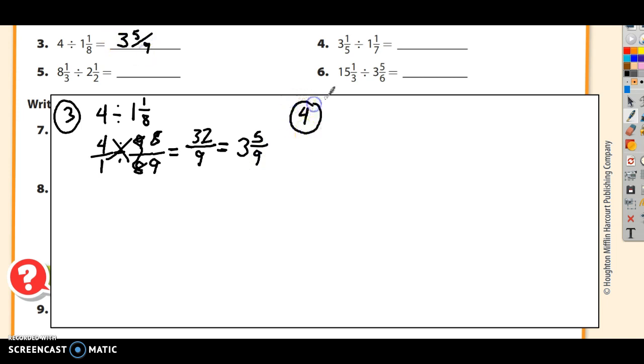Number 4. I've got 3 and a fifth, divided by 1 and a seventh. 3 and a fifth is 15, 16 over 5. Divided by 1 times 7 is 7, plus 1 is 8 sevenths. I'm going to then multiply the reciprocal. I'm going to invert 7 and 8. Now I've got some simplifying to do. 16 divided by 8 is 2, and 8 divided by 8 is 1. So now I've got 2 times 7 is 14, 5 times 1 is 5. 14 divided by 5 is 2, with 4 left over. 2 and 4 fifths.